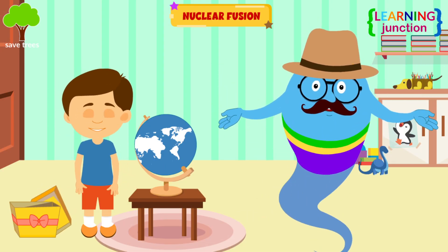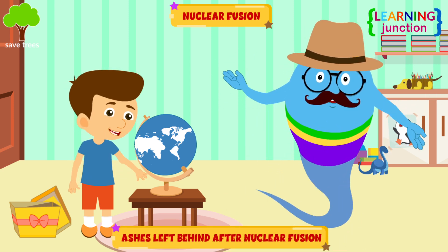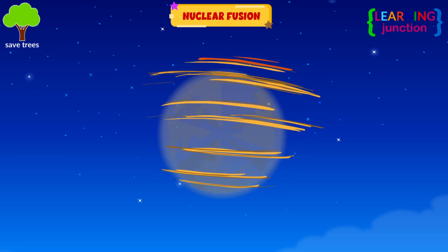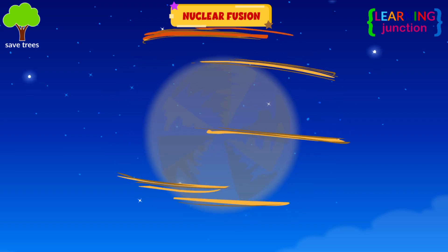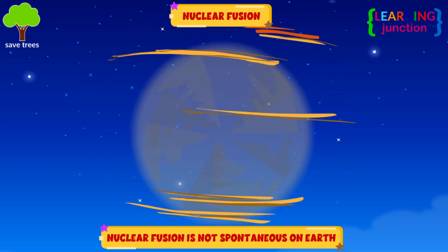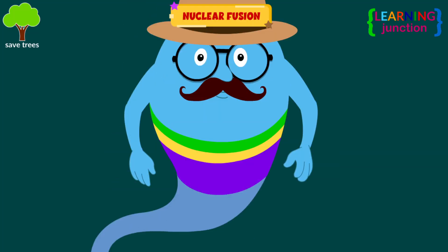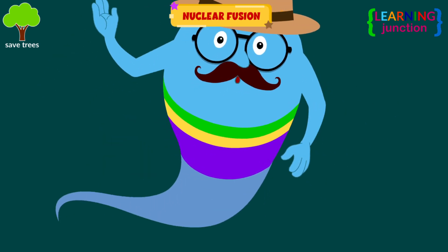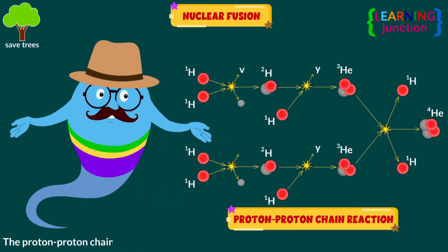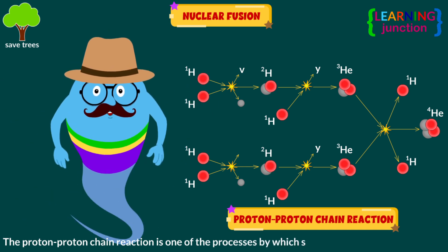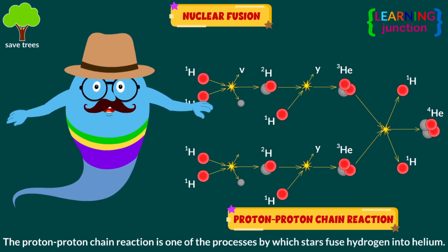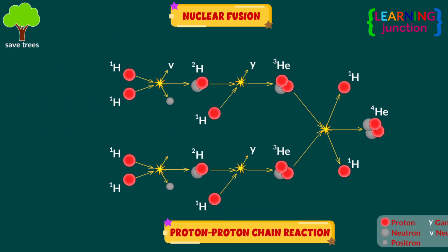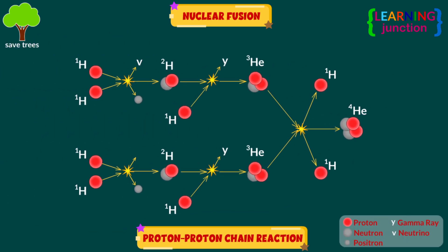Earth is made of the ashes left behind after nuclear fusion in supernovas. Turning ash back into fuel is impossible, so nuclear fusion is not spontaneous on Earth. In fusion, two light nuclei combine to form a single nucleus. The process releases energy because the total mass of the resulting single nucleus is less than the mass of the two original nuclei. The leftover mass becomes energy.